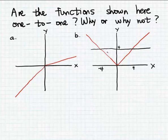The horizontal line test tells us that this function graphed in example b, although it is a function, is not one-to-one. It's not a one-to-one function.